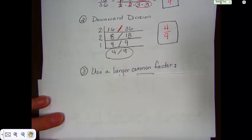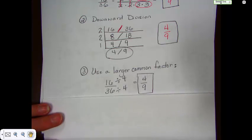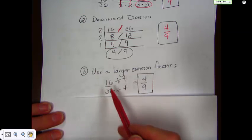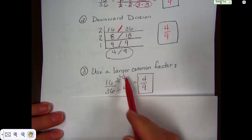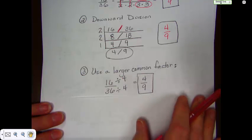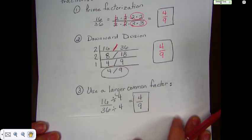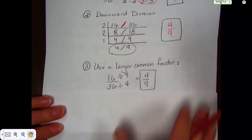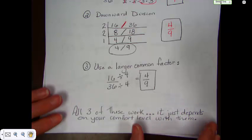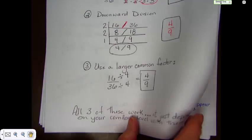There's one more way that you can use. It's called using a large common factor. If you can see a bigger number that will go into both the numerator and denominator, you can go ahead and divide by it. In this case, I can easily see that 4 goes into 16 and 4 goes into 36. And when I divide the top and the bottom both by 4, I get 4 9ths. Coincidentally, the same number I got from prime factorization and downward division. All three of these work. It just depends on your comfort level with them, which one is the most comfortable for you to use.